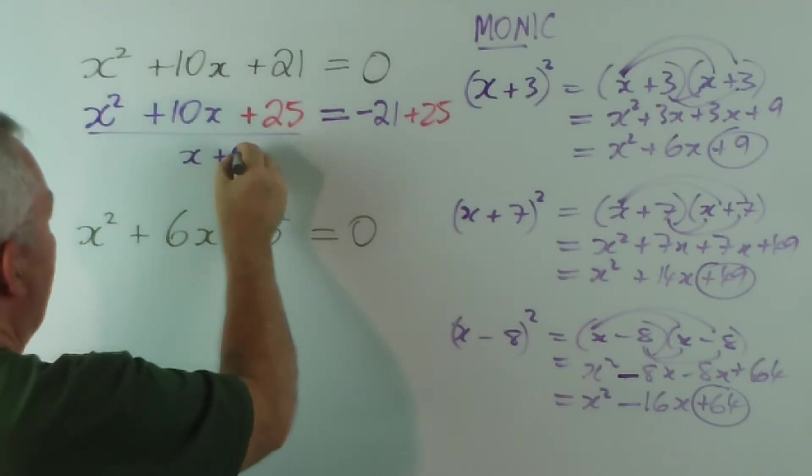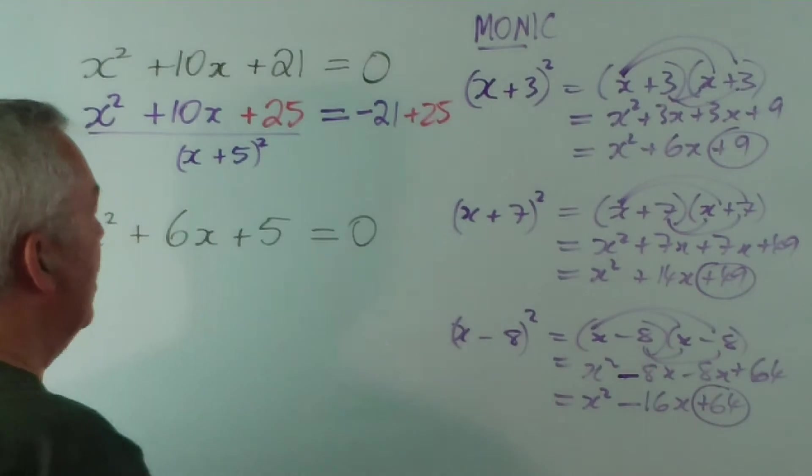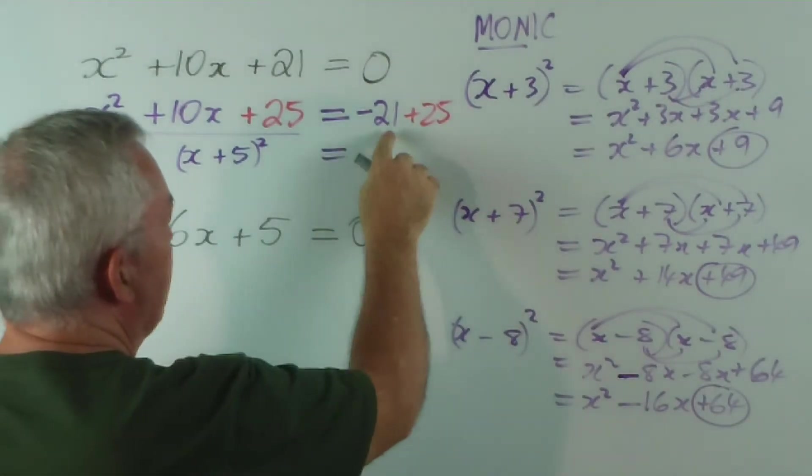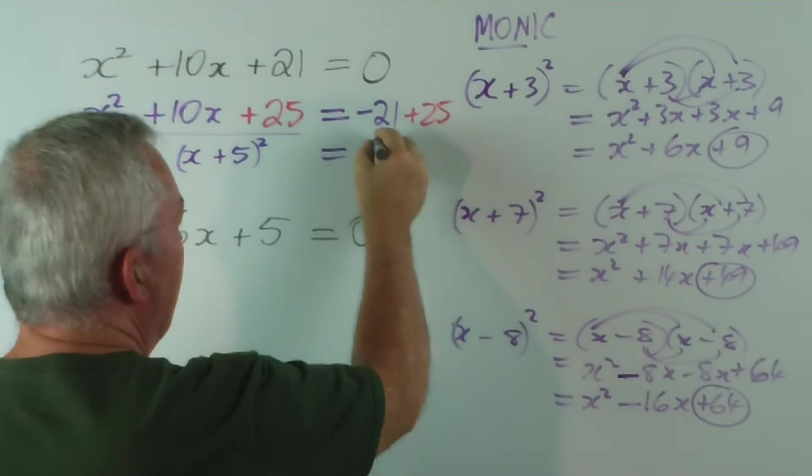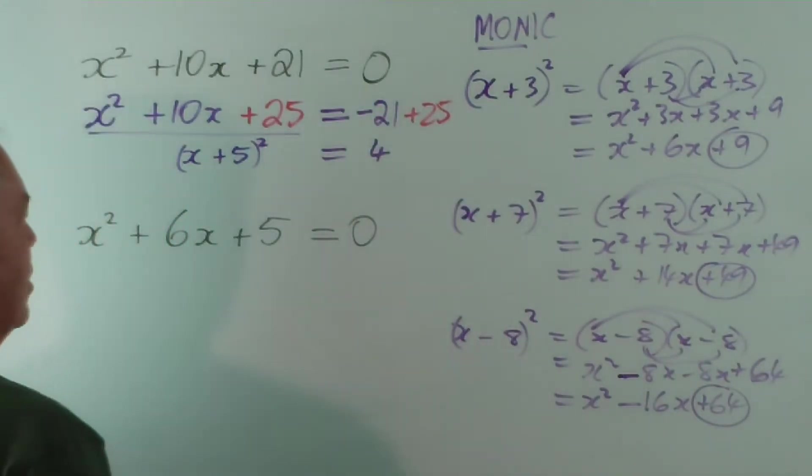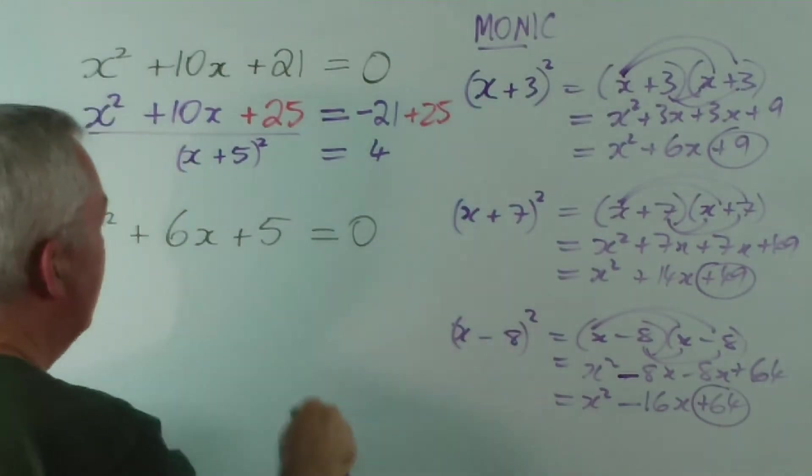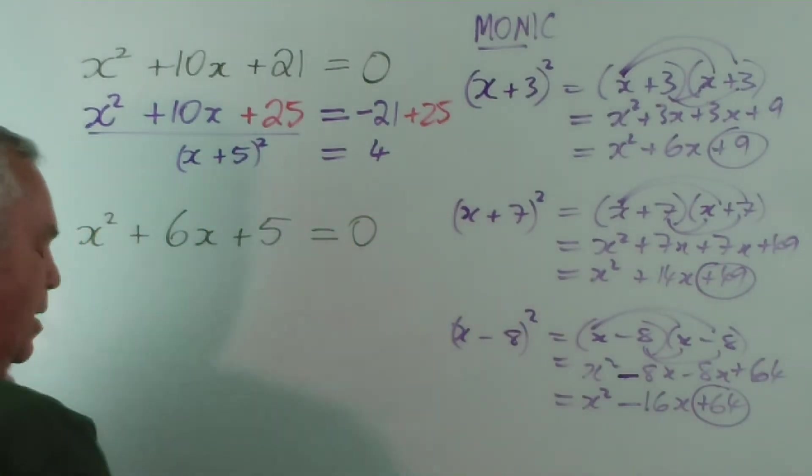And this is (x+5)² all squared. On this side of course, I've got negative 21 plus 25 is 4, or 25 take away 21 is 4. Now I haven't left a lot of room to work because I wanted to do two examples on the board, but we would now take the square root of both sides.